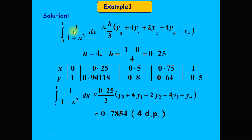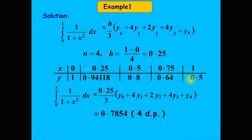Adding the step size again gives x = 0.5, and substituting into the function gives y₂ = 0.8. Adding again gives x = 0.75, yielding y₃ = 0.64. The final value is x = 1, giving y₄ = 0.5. So the five points are x₀ through x₄ with corresponding y₀ through y₄.